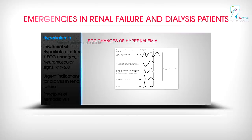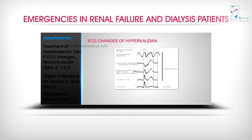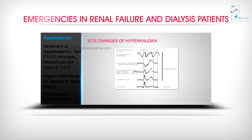ECG changes of hyperkalemia by serum potassium level (mEq/L): at 10 — ventricular fibrillation; at 9 — auricular standstill, intraventricular block; at 8 — prolonged PR interval, high T wave, depressed ST segment; at 7 — high T wave; at 5 — normal.